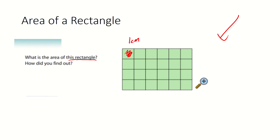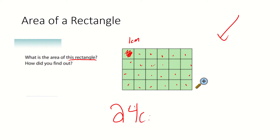What we're asking is: what is the area of this rectangle? What the area is, guys, is each of these represents a square — represents one centimeter, let's say. So what I'm saying here is: one, two, three, four, five, six, seven, eight, nine, ten, eleven, twelve, thirteen, fourteen, fifteen, sixteen, seventeen, eighteen, nineteen, twenty, twenty-one, twenty-two, twenty-three, twenty-four.